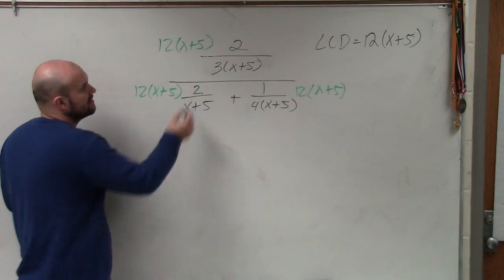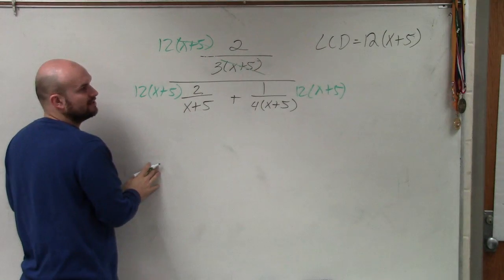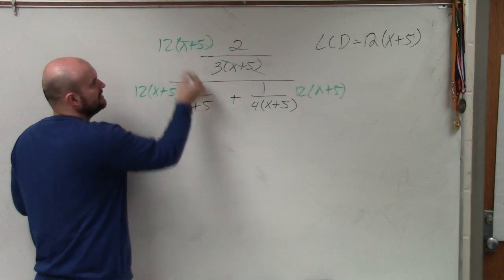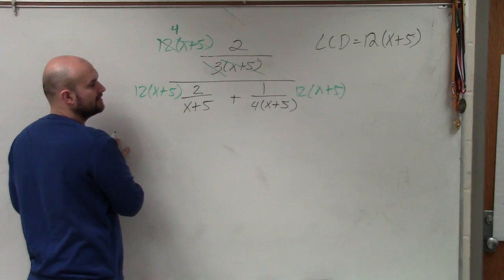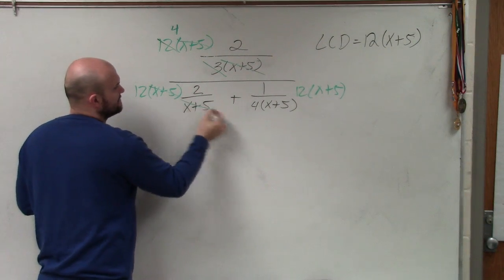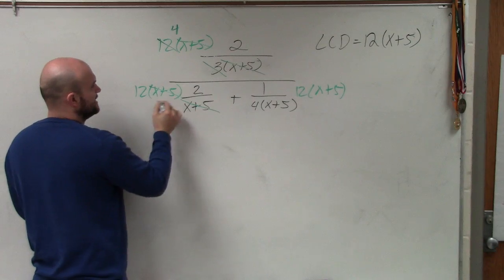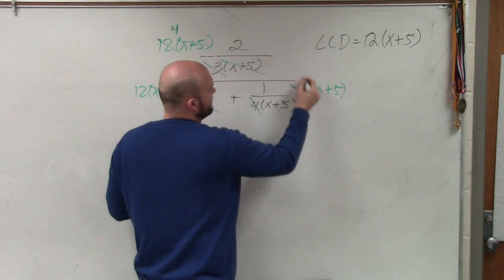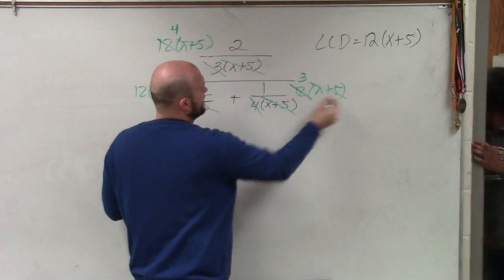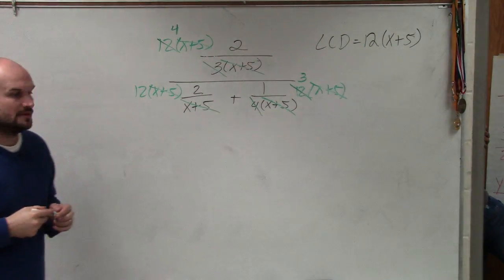Now what I notice is (x+5) divided by (x+5) equals 1. 12 divided by 3 equals 4. Over here that gives you 24. And here, 12 divided by 4 equals 3. (x+5) divided by (x+5) divides out.